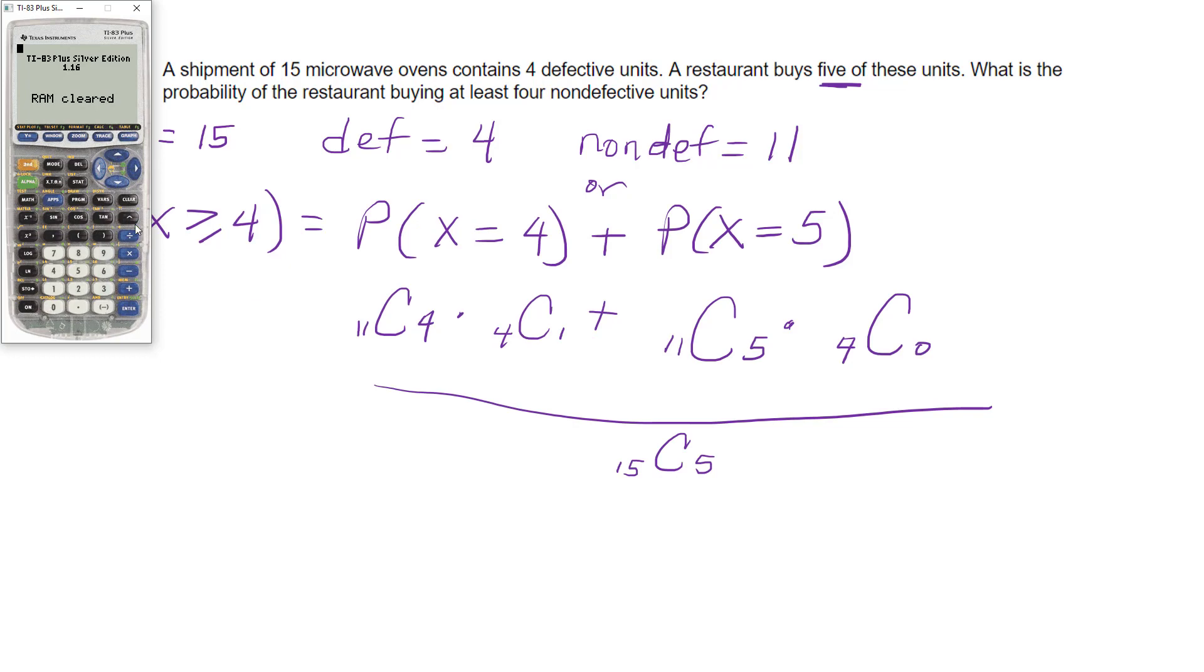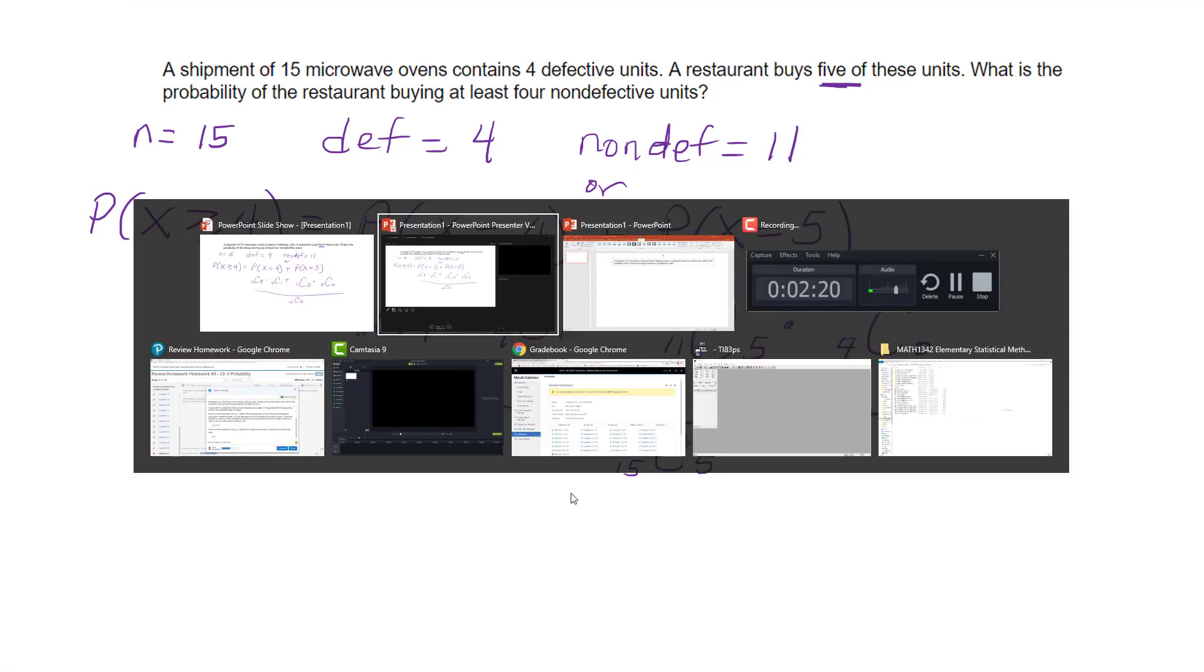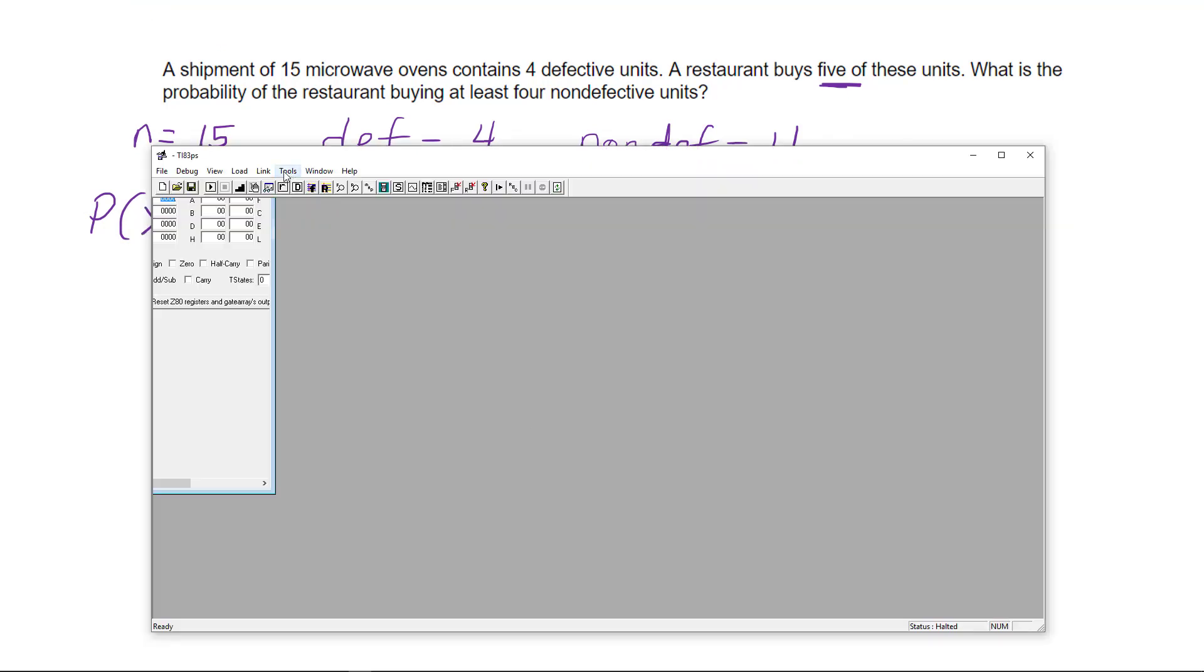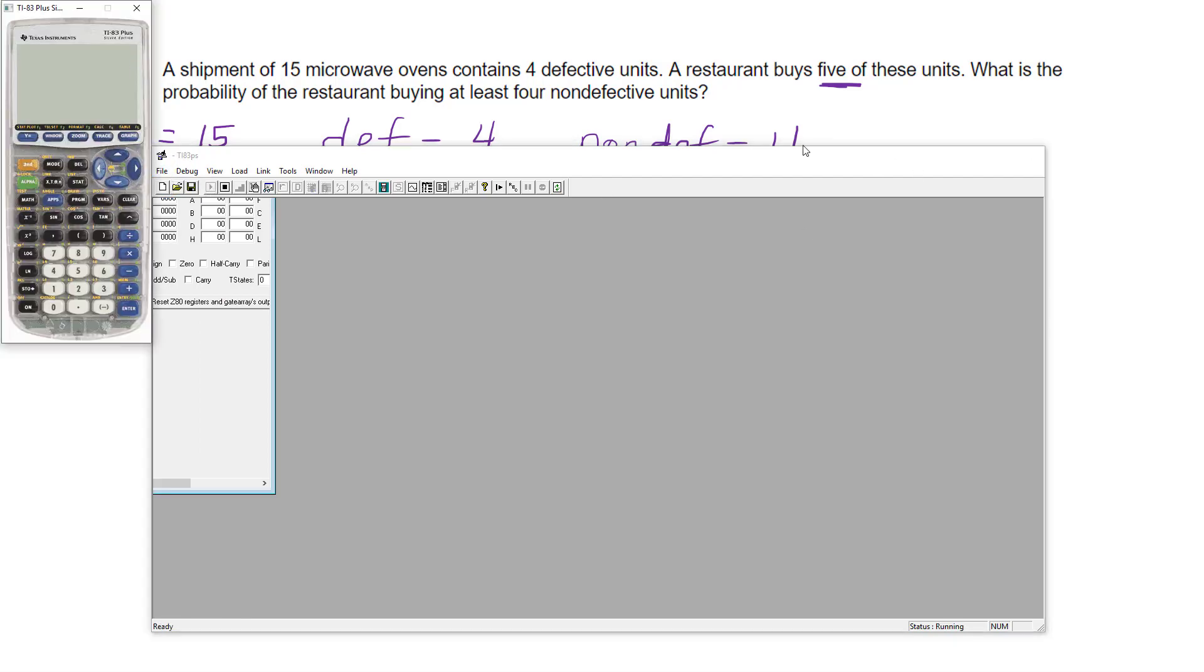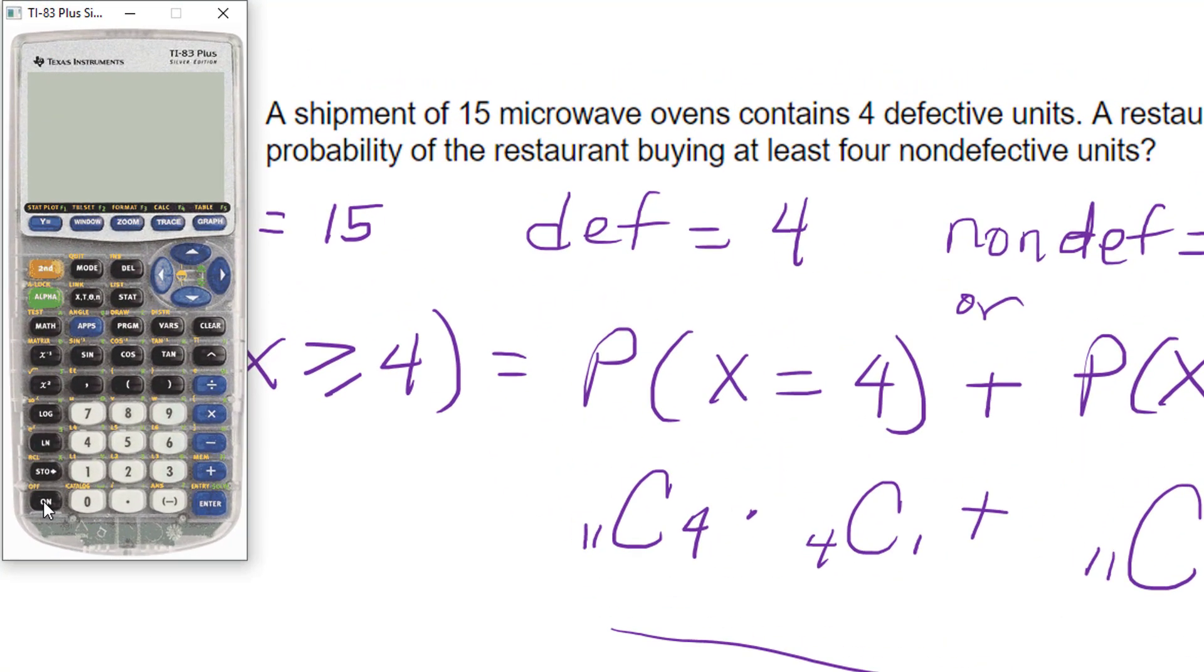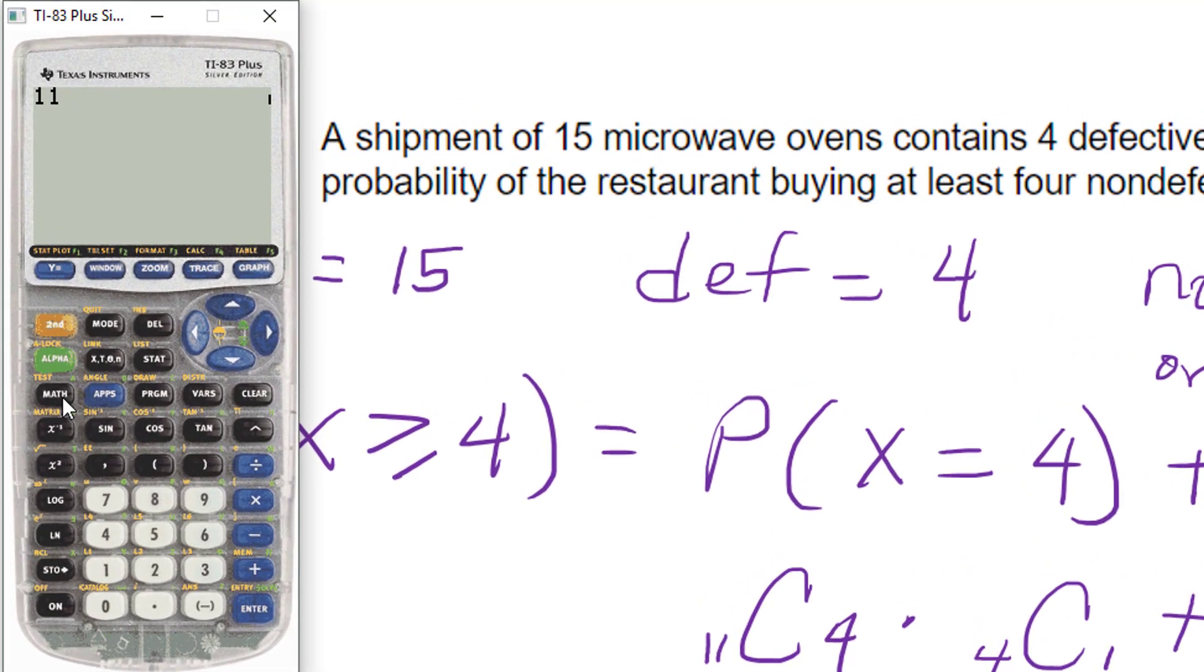So let me get my calculator. There is on your calculator a way to do combinations, but it's weird. You have to do the number first, so 11, and then you do math, go to the right to probability, and then look at there, it's nCr. So the number of items taken r at a time. And so I hit enter, and I do four.